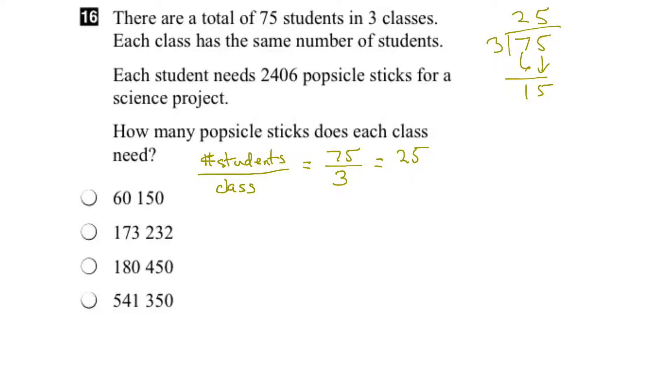Let's look at the next statement. It says each student needs 2,406 popsicle sticks for a science project. So that means the number of popsicle sticks per student equals 2,406. They give us this information, so there's no calculation to do for this statement.